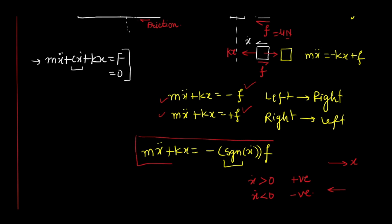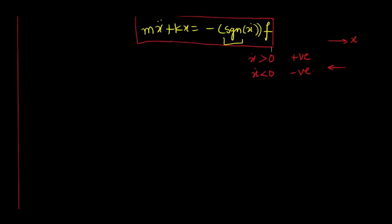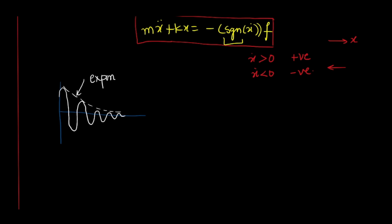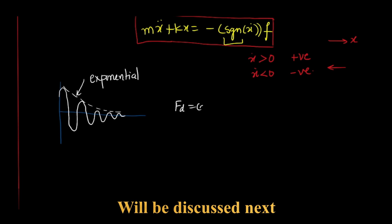Another important aspect of Coulomb damping is visualizing the decay of the system. In viscous damping, the amplitude decay follows an exponential curve. However, in Coulomb damping the damping force is constant, and we can use the equation of motion to understand how the decay behaves differently in this case.